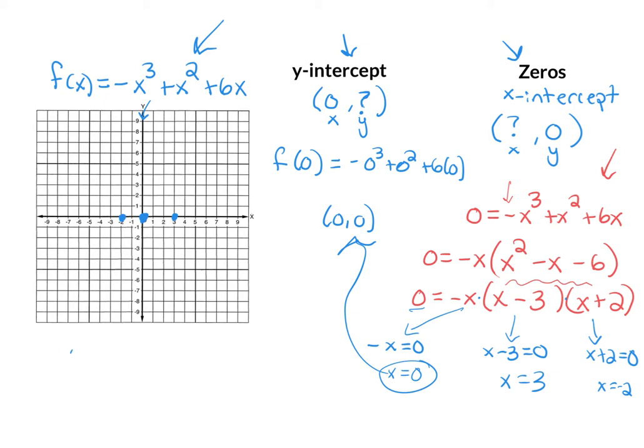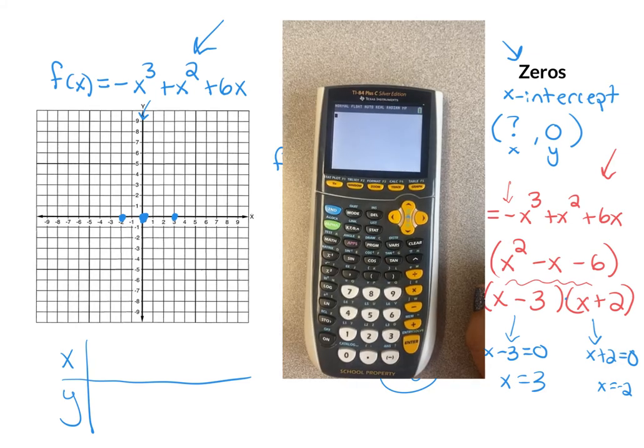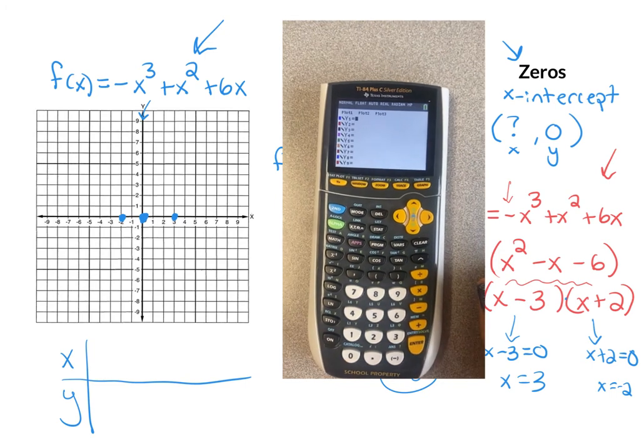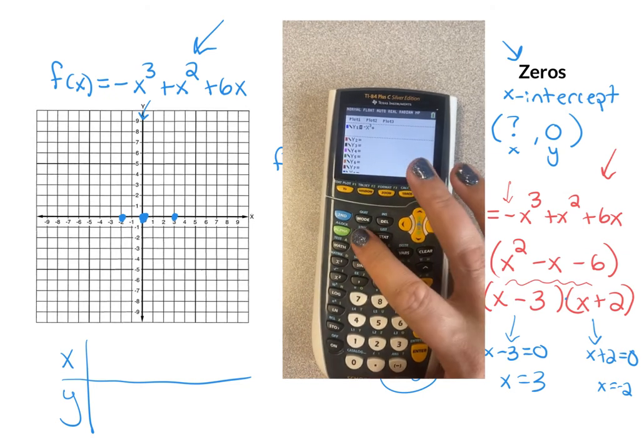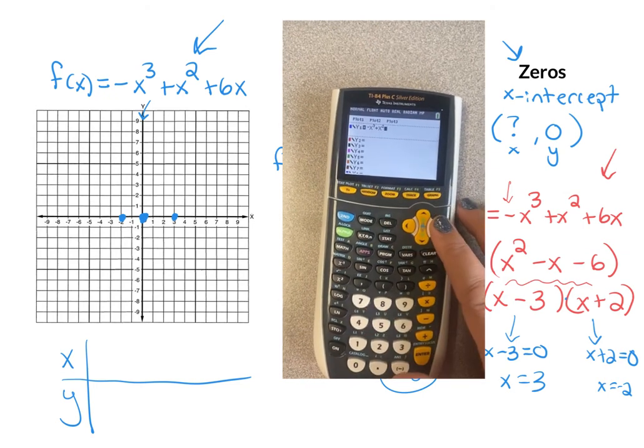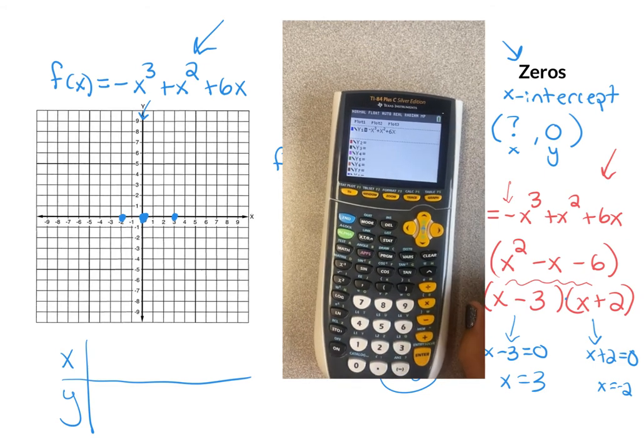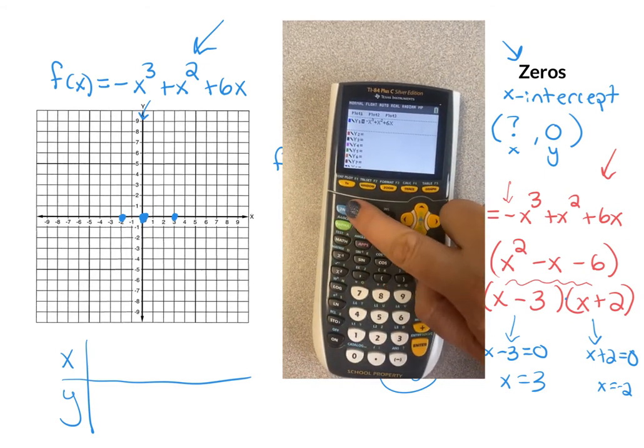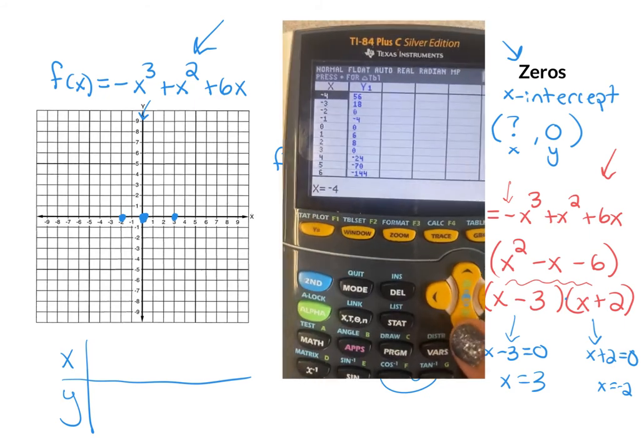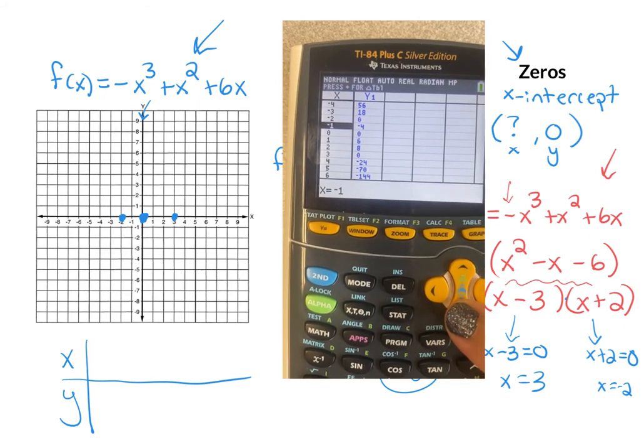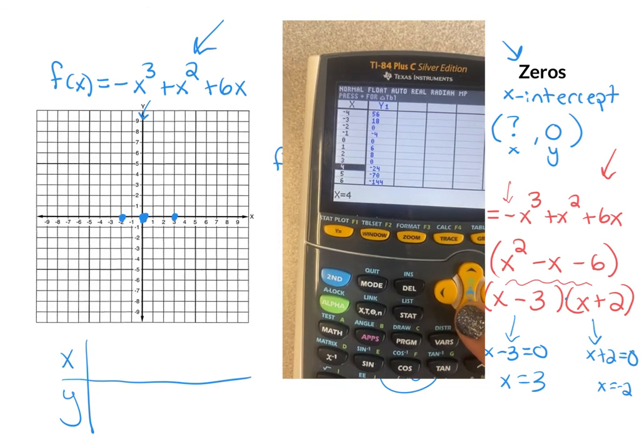Okay, so we all know how to make an x-y table, pick values for x and get values for y. But now I'm going to show you how to do this quickly on your graphing calculator. All right, so on the calculators, I'm hitting y equals, and I'm going to type in that function negative x to the third plus x squared plus 6x. Now I can access the table by hitting second and then graph. And voila, here are my table values. So I'm going to pick some of these points and write them down.